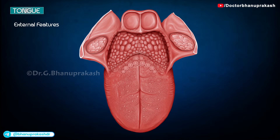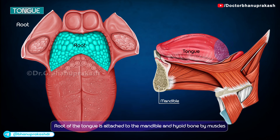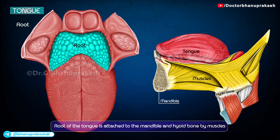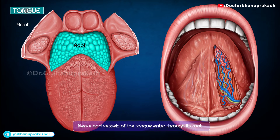The tongue presents with the following external features: a root, a tip, and a body. The root of the tongue is attached to the mandible and the hyoid bone by muscles. These attachments prevent the tongue from being swallowed during deglutition. The nerve and vessels of the tongue enter through its root.